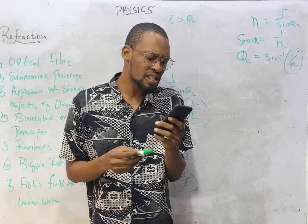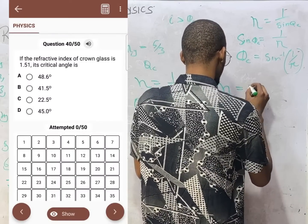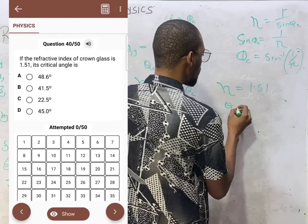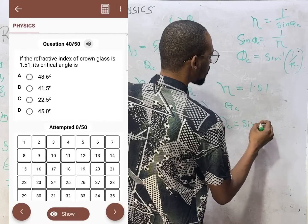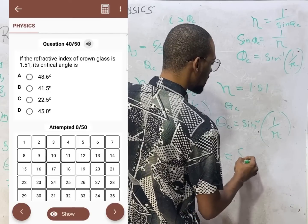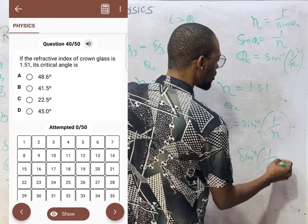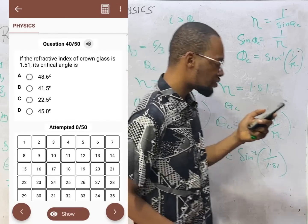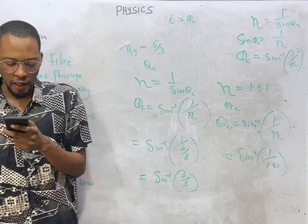Question three: if the refractive index of crown glass is 1.51, what is the critical angle? The critical angle is always sine inverse of 1 over the refractive index — that is sine inverse of 1 over 1.51. That gives you 41.5 degrees. That is your critical angle.